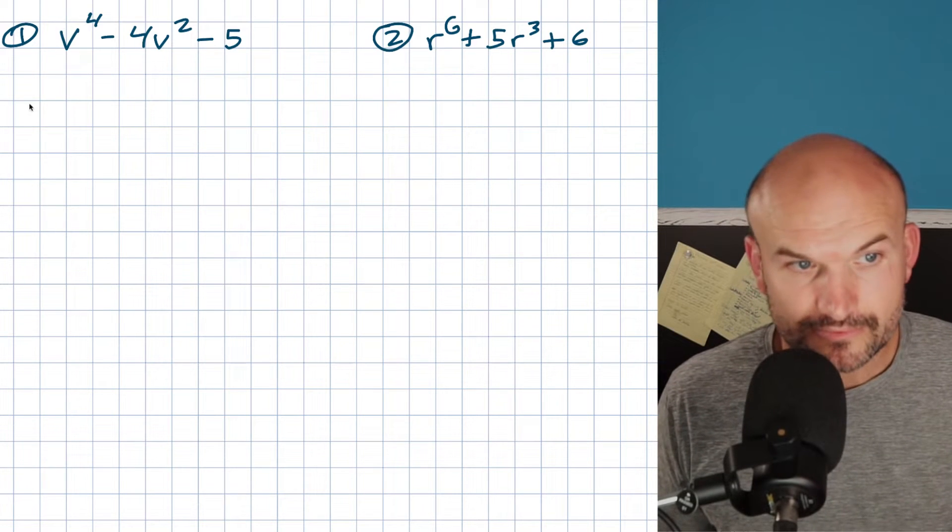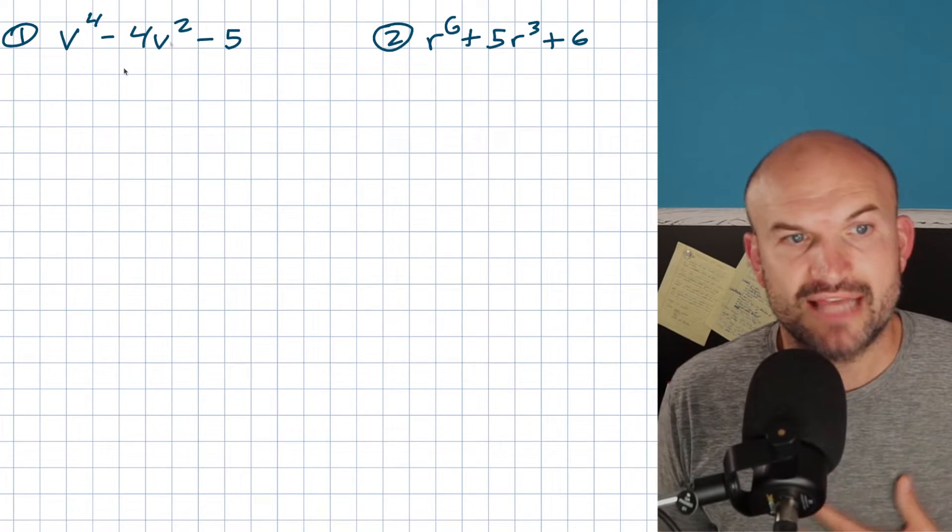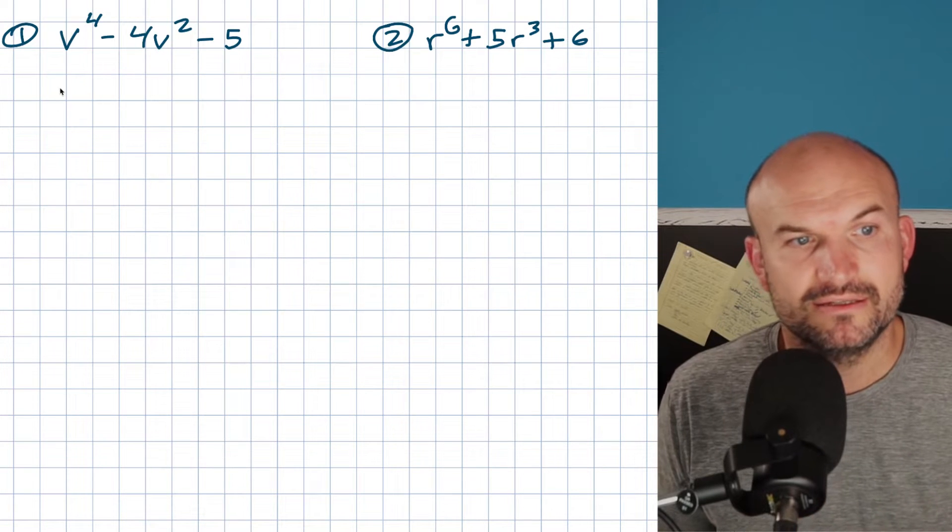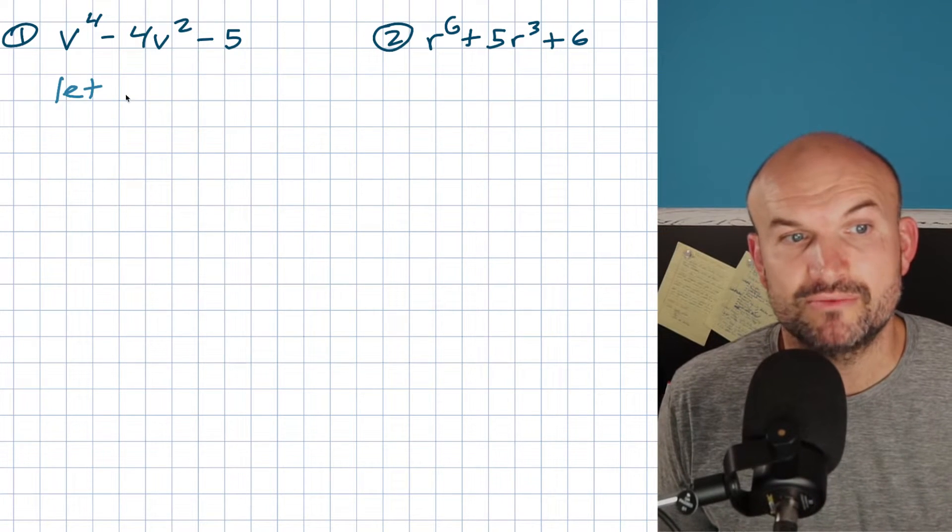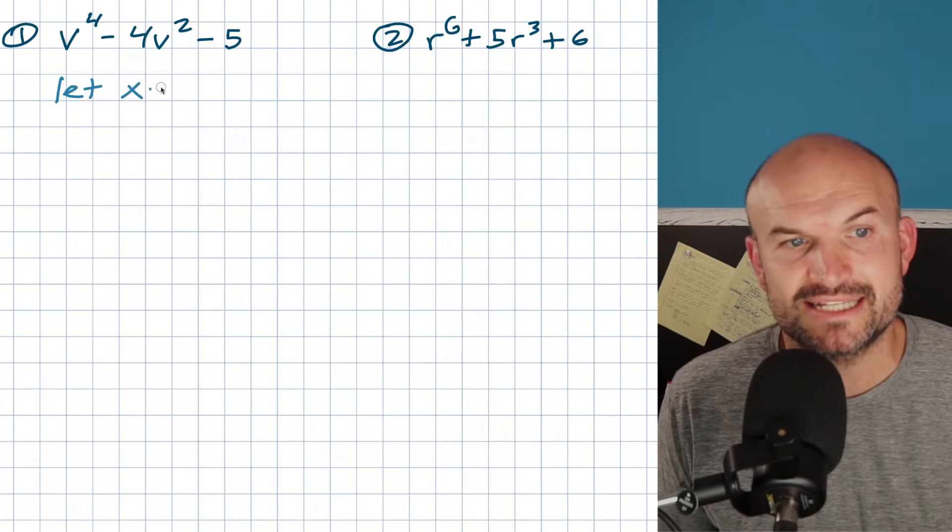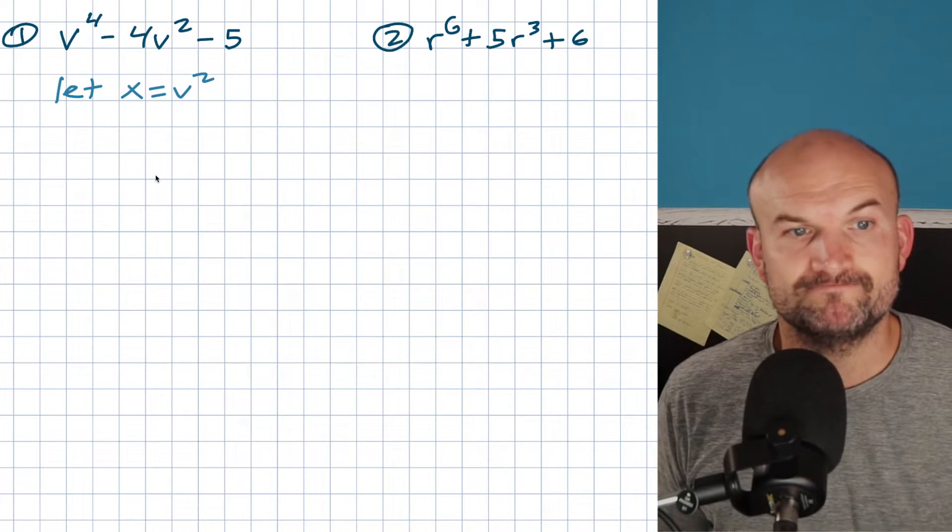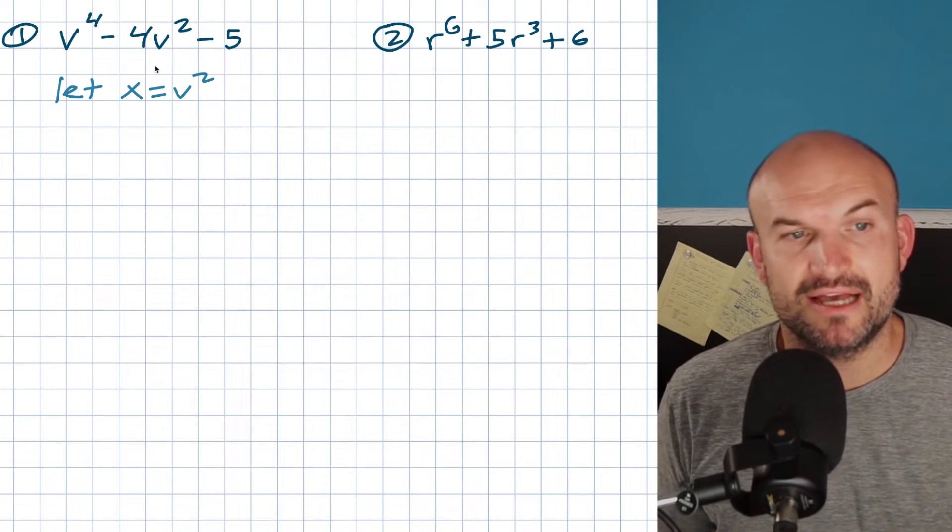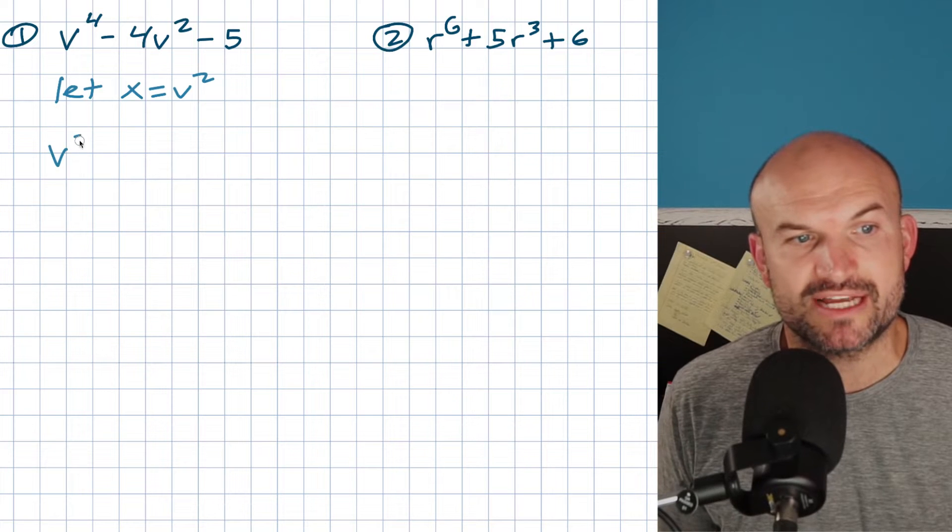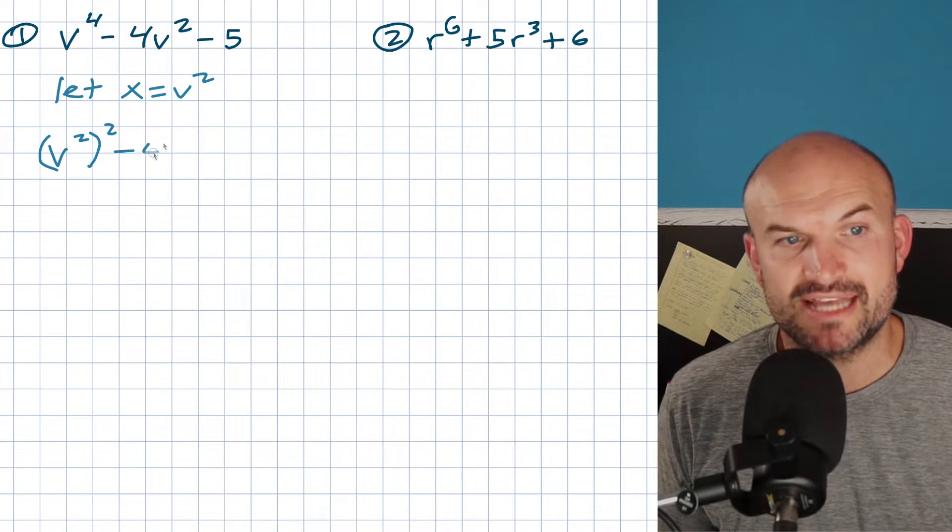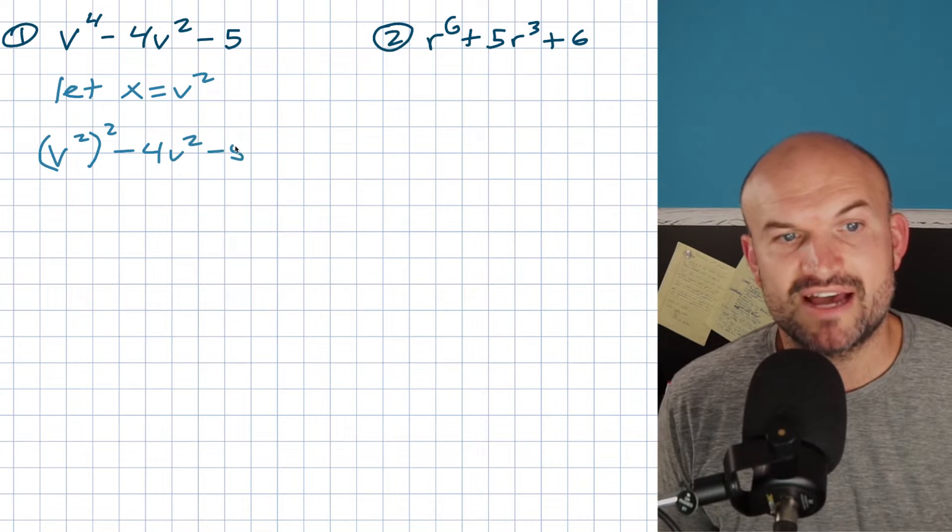So what I want you to do is, why don't we use some substitution? Why don't we let x equal v squared. So if I'm going to let x be v squared, then what I can do here is I can rewrite this as v squared squared minus 4v squared minus 5. Now remember, x was equal to v squared, right? So this is really x squared minus 4x minus 5.